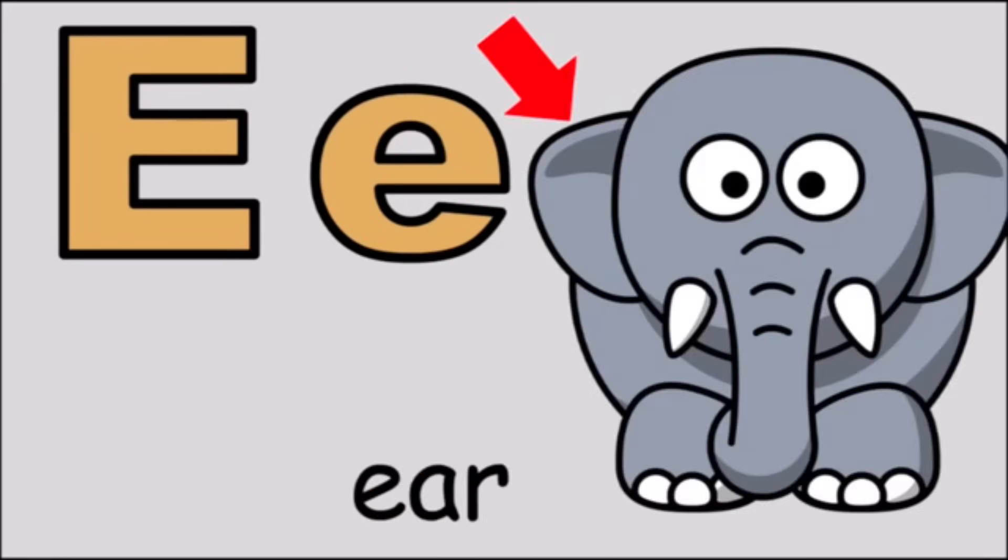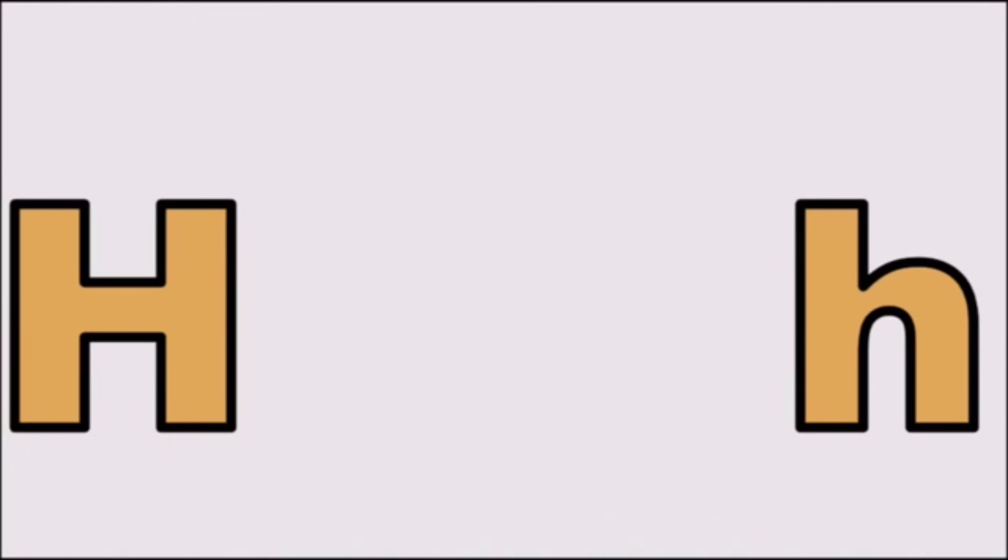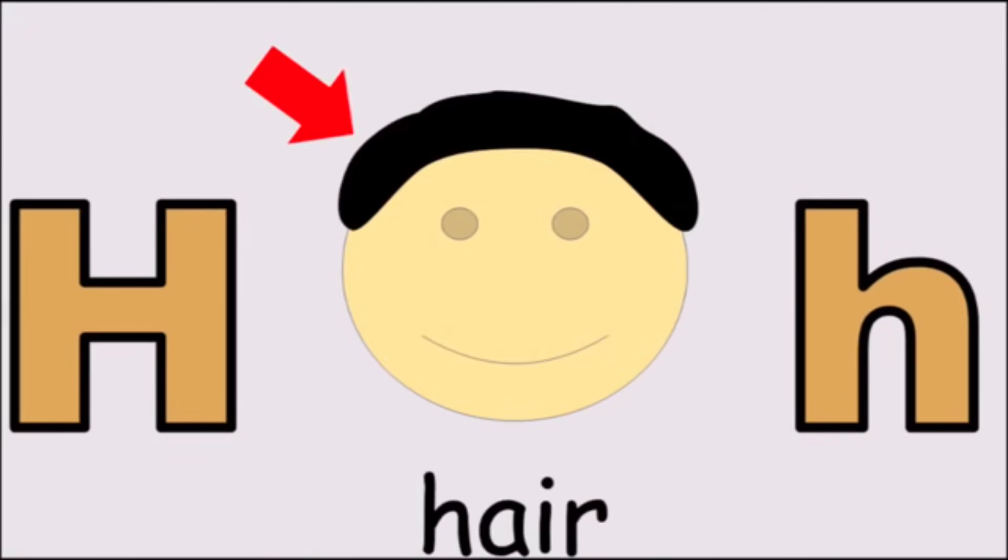E for ear, e, e, ear. F for fish, f, f, fish. G for grasshopper, g, g, grasshopper. H for hair, h, h, hair.